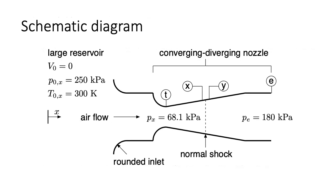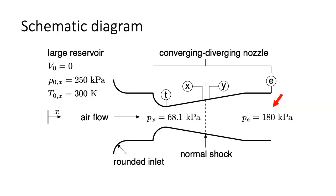To begin, let's look at a schematic diagram for this flow. The flow starts at the left in the large reservoir at zero velocity, at the specified stagnation pressure and temperature. It then moves to the right in the X direction through the well-rounded inlet, the converging section, the throat, and then the diverging section, where the normal shock appears before the exit. The throat is labeled as T, the locations just before and after the shock are labeled as X and Y respectively, and the location at the exit is labeled as E.